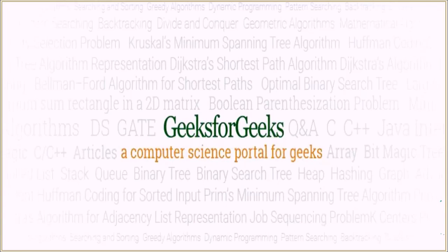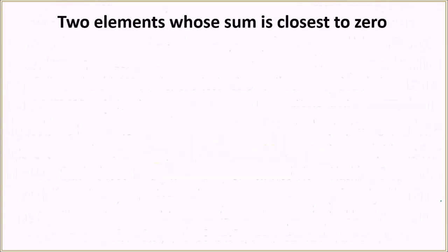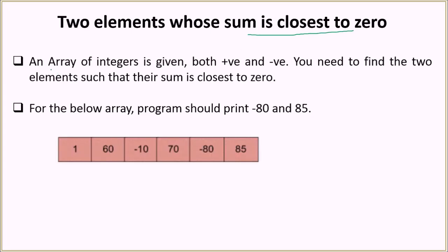Hello everyone and welcome to Geeks for Geeks. Today the problem we are going to see is to find two elements whose sum is closest to zero. In this problem you will be given an array of integers which will contain both negative and positive integers. You have to find two elements such that their sum is closest to zero. There have to be exactly two elements and their sum has to be closest to zero.